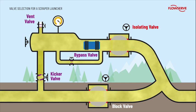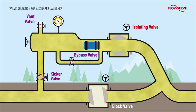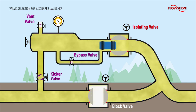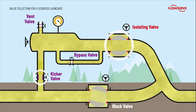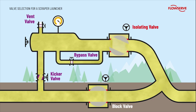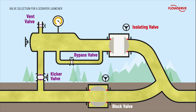The bypass and block valves are now closed. This generates a gas flow behind the scraper, launching it into the pipeline. Once the scraper has moved down the pipeline, the block valve is opened and the kicker and isolating valves are now closed. The launcher is now isolated and returned to its original position.